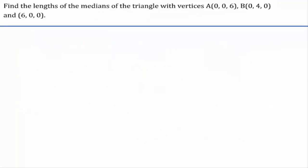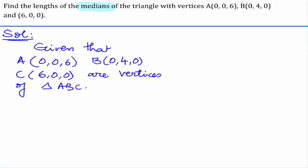In this question, we were given the vertices of the triangle and we have to find out the lengths of the medians of the given triangle. Given that A(0, 0, 6), B(0, 4, 0), and C(6, 0, 0) are vertices of triangle ABC.